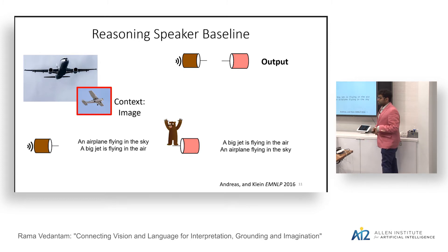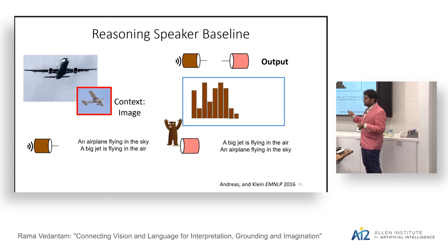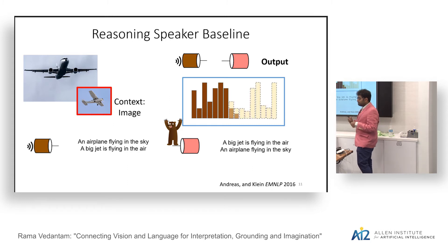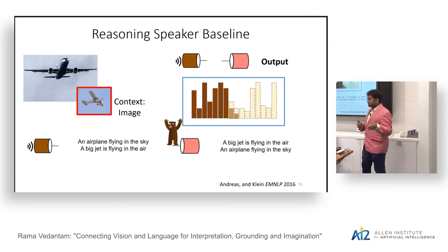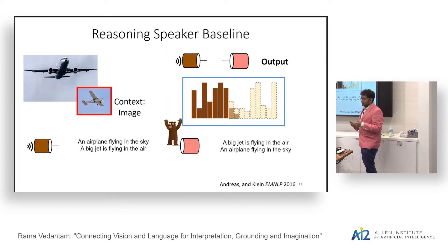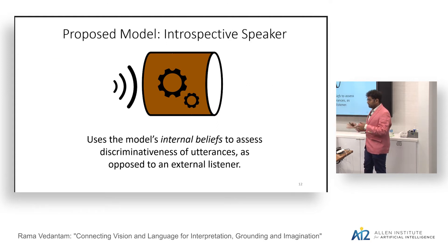The issue with this approach is that imagine if the distribution of sentences the speaker is trained on has no significant overlap with the actual true discriminative ground-truth distribution. Then the speaker becomes the bottleneck — you'd need to sample many sentences before finding one that is truly discriminative that the listener can use. Our approach addresses this issue. The key insight is what we call an introspective speaker, which uses the model's internal beliefs on the discriminativeness of utterances to pick words at every time step.